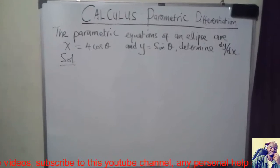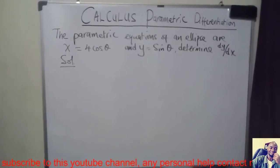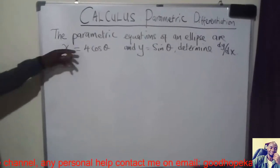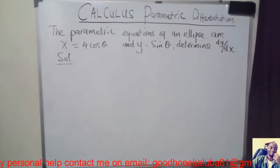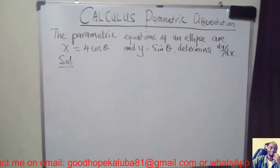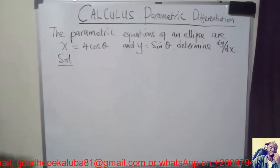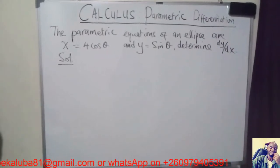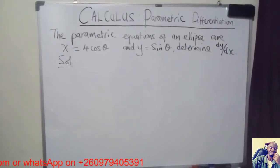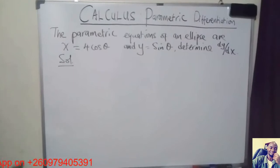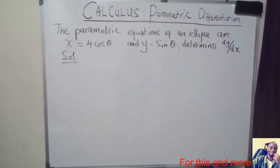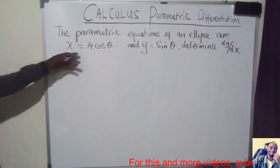Determine dy over dx. Normally you can be given any equation like this one and another equation like this one. But x and y are expressed in terms of another variable theta. The variable theta is called the parameter. Because x and y are expressed in terms of theta, they are called parametric equations. One of them is the ellipse like we have.